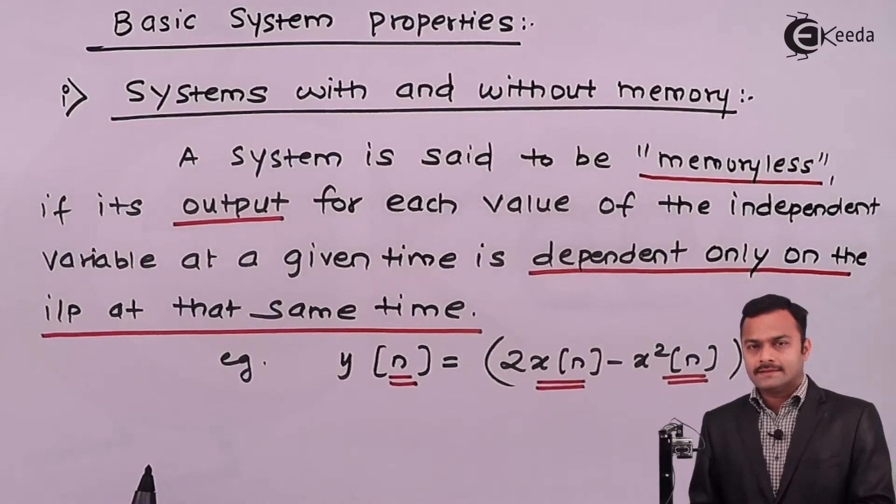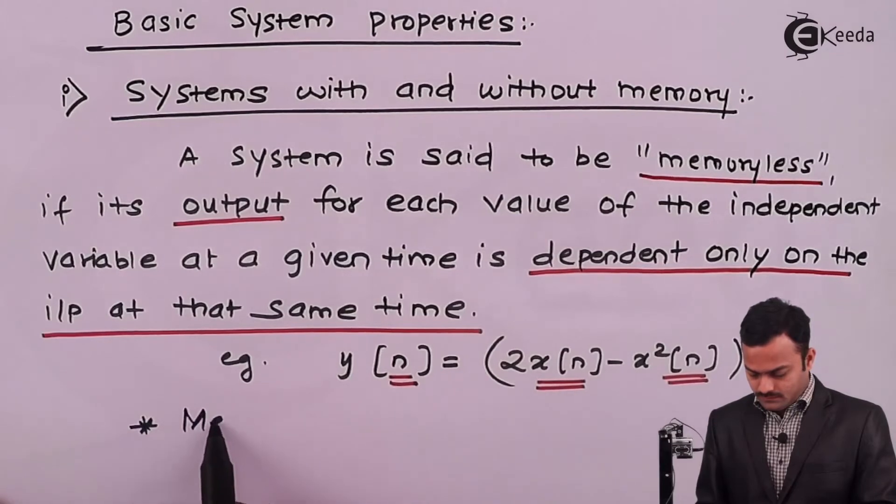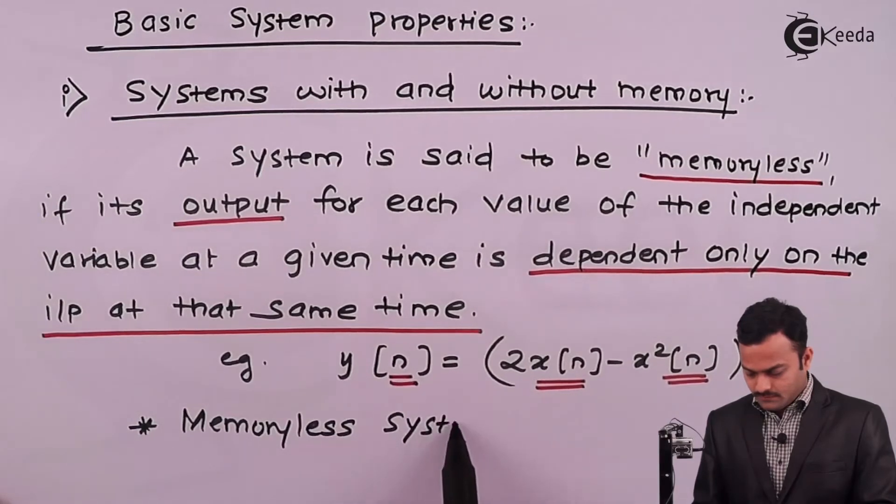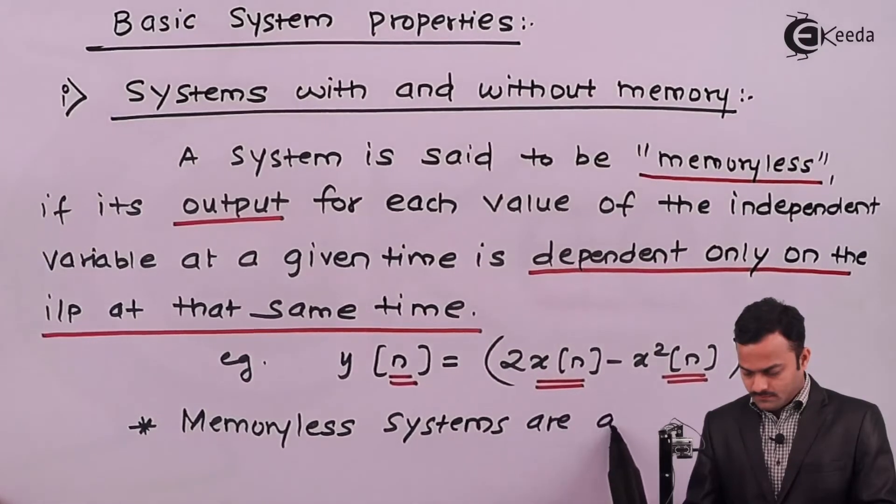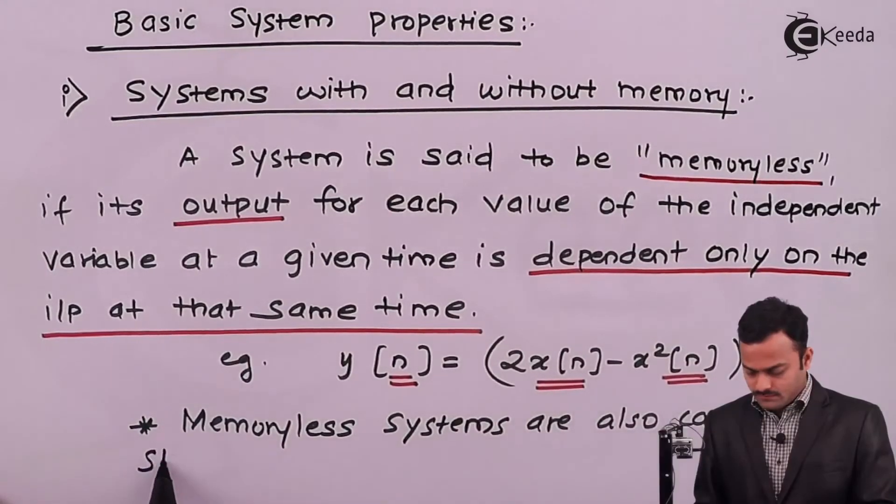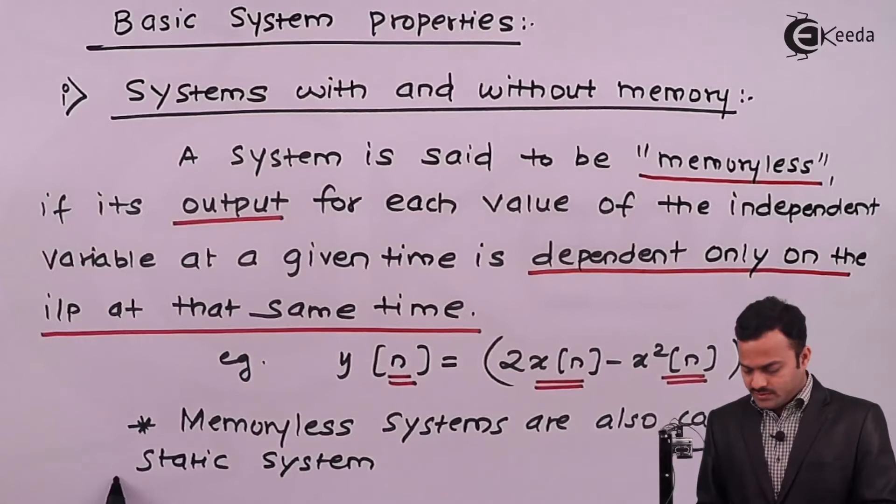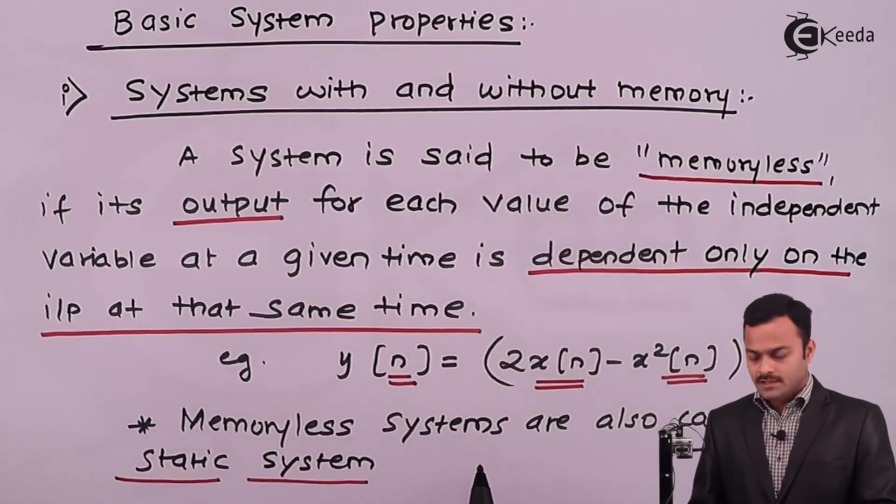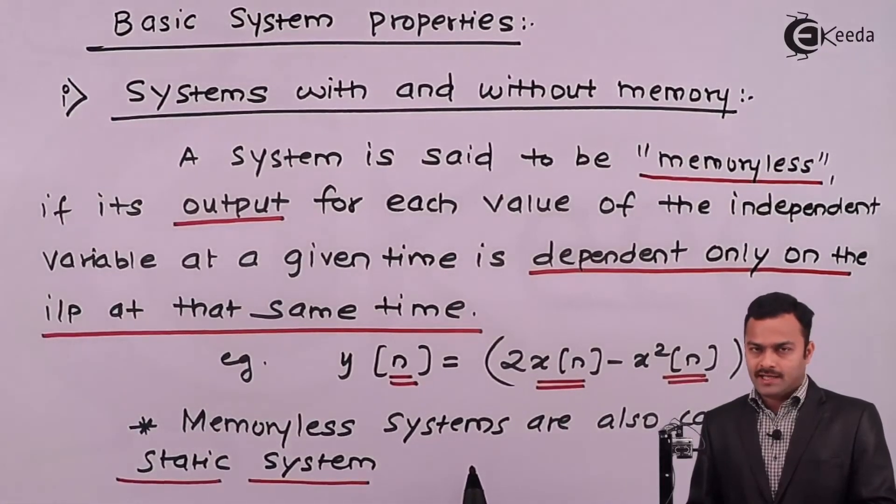Memoryless system is also called as static system. Sometimes we may use the word static system, it is nothing but a memoryless system. Memory is not required because output depends only on the input at that particular instant.